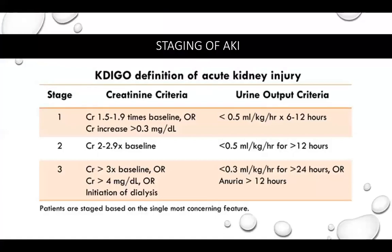This is the KDIGO staging of acute kidney injury, using baseline creatinine as a reference. Stage one, or mild AKI, is 1.5 to 1.9 times baseline. Stage two is 2 to 2.9 times baseline — moderate AKI. Stage three, severe AKI, is greater than three times baseline, or a creatinine in the mid-300s, or the requirement of dialysis. Staging is important because it has important prognostic information.